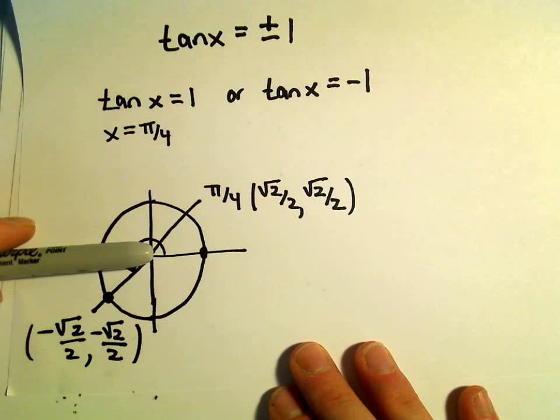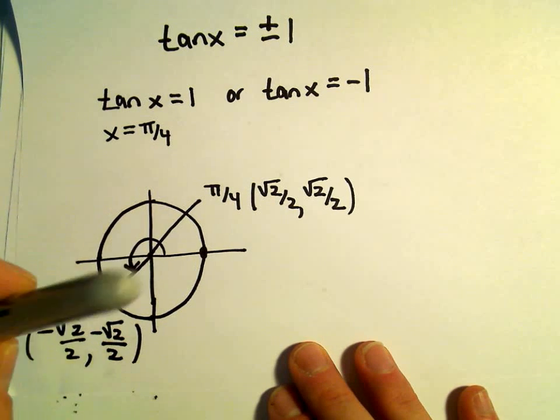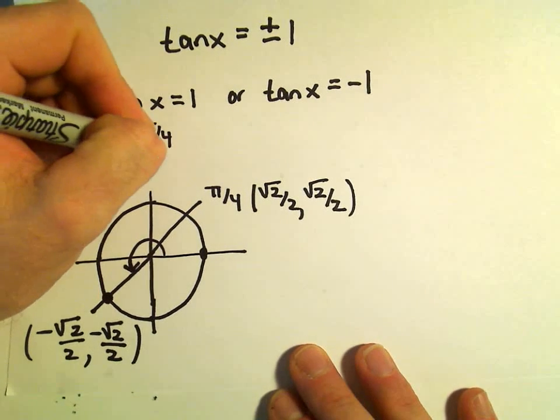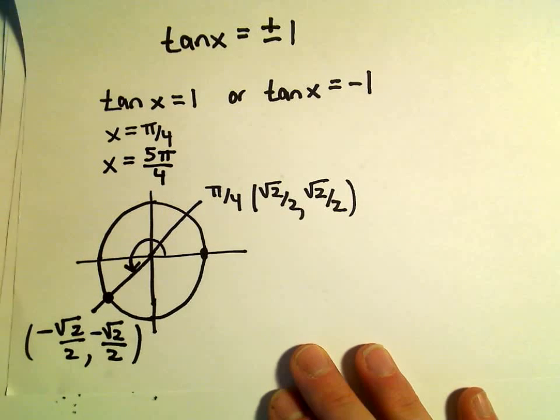So what angle is this now is the question. If we've gone halfway around, that would be the angle pi. And then we would have to go another pi over 4. So that would give us x equals 5 pi over 4. That would be another solution.